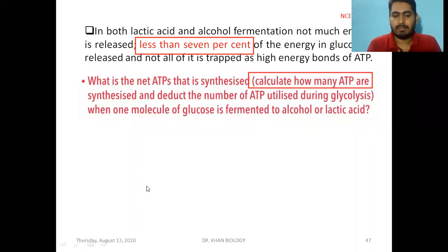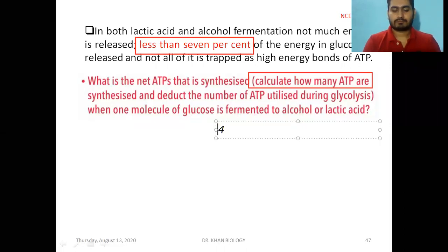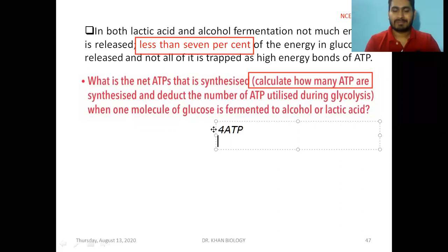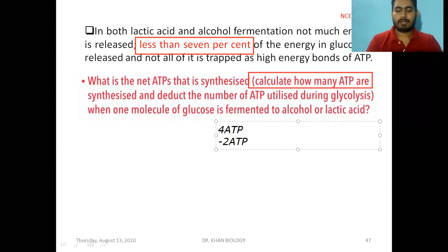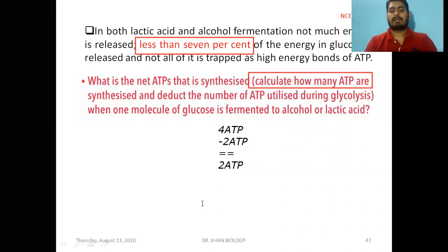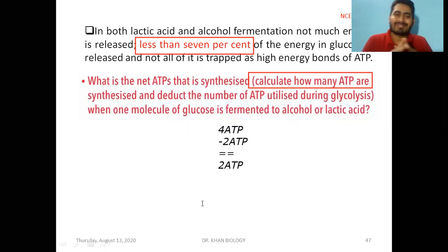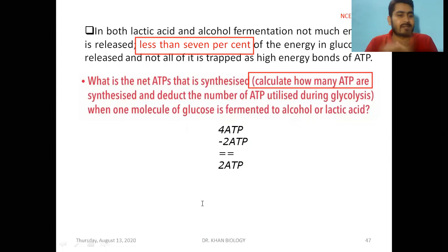From one glucose molecule, glycolysis produces 4 ATP, but 2 ATP are consumed as input. So the net ATP produced during the fermentation process is just 2 ATP per glucose molecule. Even though this is very low, it is important in industrial processes.